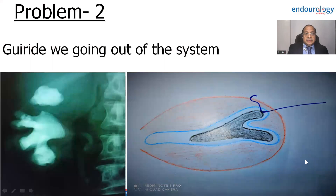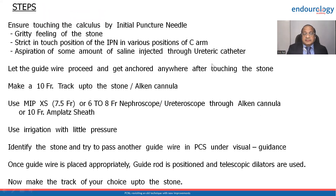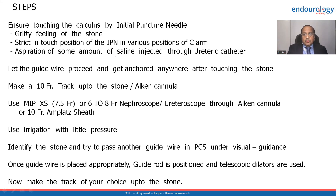The next problem: the guide wire again and again does not go into the pelvicalyceal system — it touches the stone but then exits the system somewhere. Do not lose heart. First, be very sure that your needle has reached up to the stone. Your guide wire should be touching the stone before going out of the system. Feel the stone with the gritty feeling of the needle. Repeatedly position the C-arm at 0 degrees and 30 degrees to confirm the needle is touching the stone. There may be only a drop of fluid on aspiration — not a free flow — but that gives you confirmation that you are at the pelvicalyceal system and touching the stone.